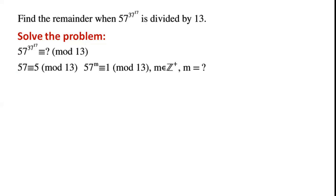Ideally, we want to find the value of m, where m is a positive integer, such that 57 to the power of m is congruent to 1 mod 13.